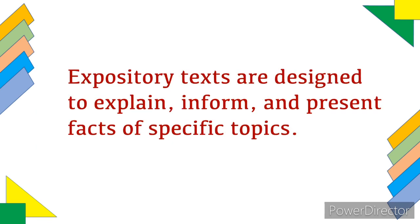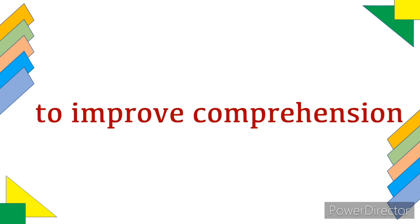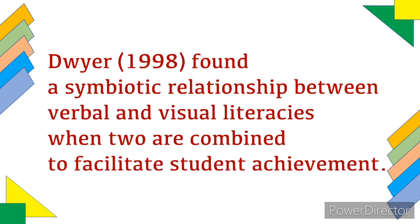Expository texts are designed to explain, inform, and present facts of specific topics. Examples of these visual elements include graphs, tables, maps, illustrations, and the like. Their primary function is to improve comprehension of a reading material. Understanding graphic elements is an important aspect of comprehending text that some tend to skip. The concept of visual-verbal symbiosis is rooted in the idea that visuals support verbals, and vice versa. Dwyer found a symbiotic relationship between verbal and visual literacies when the two are combined to facilitate student achievement.